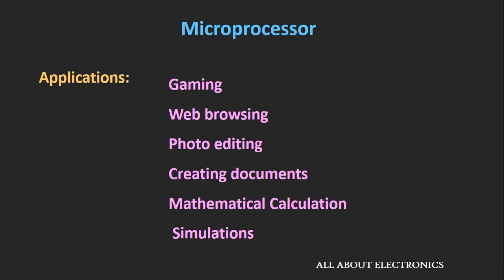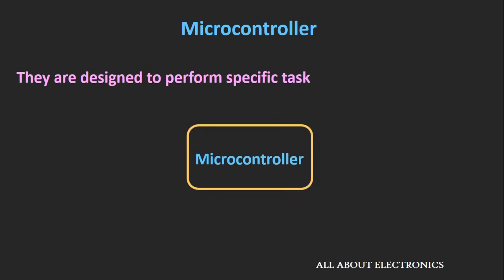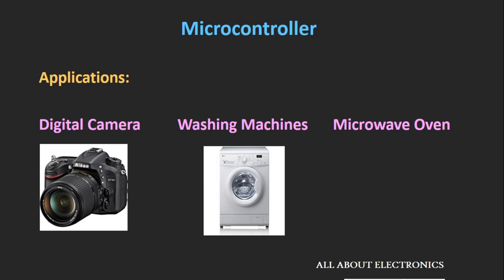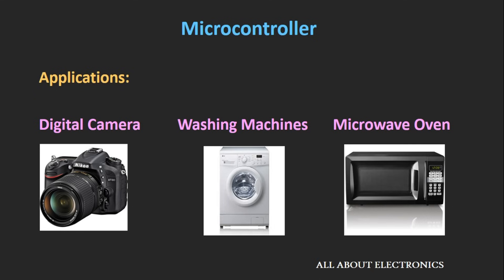Microprocessors are also used in applications where intensive processing is required. In the case of a microcontroller, they are used for a specific task — based on the inputs given to the microcontroller, it does some processing and gives the result as output. The input could be a user input or inputs from sensors. Examples of microcontroller applications include digital cameras, washing machines, and microwave ovens — devices where the task to be performed is predefined.